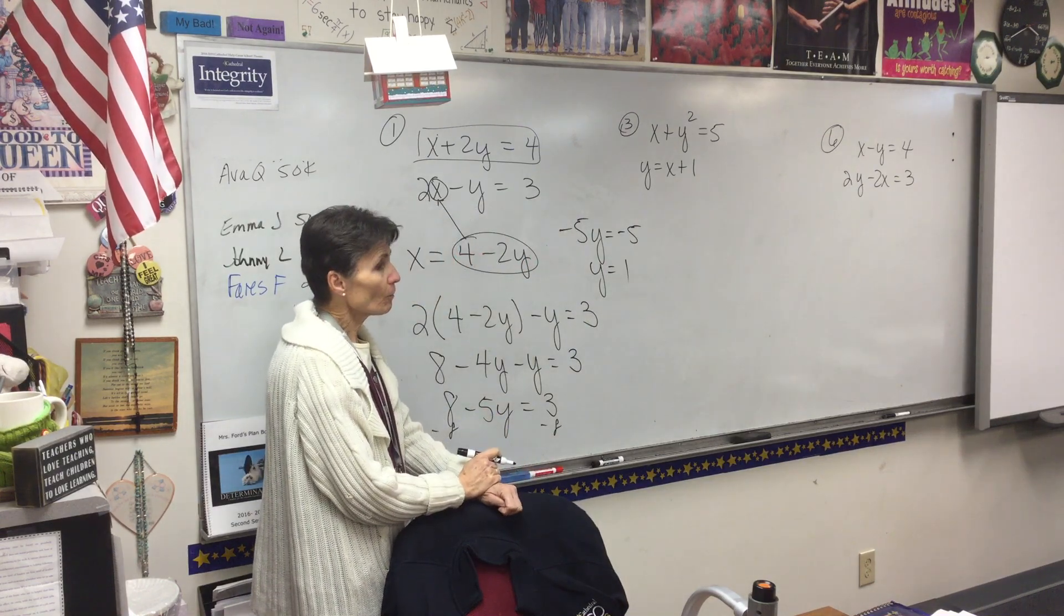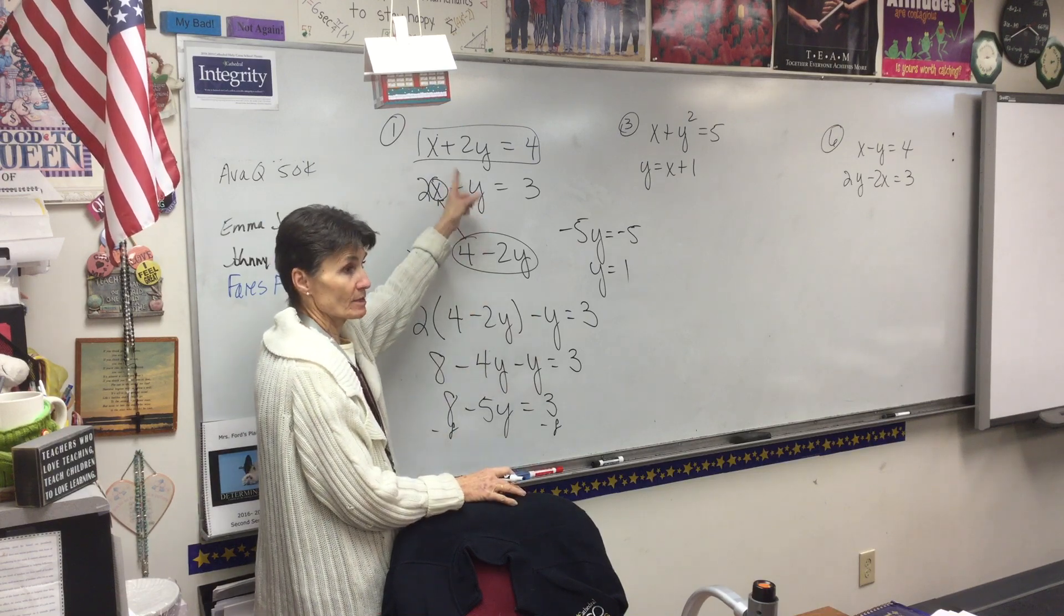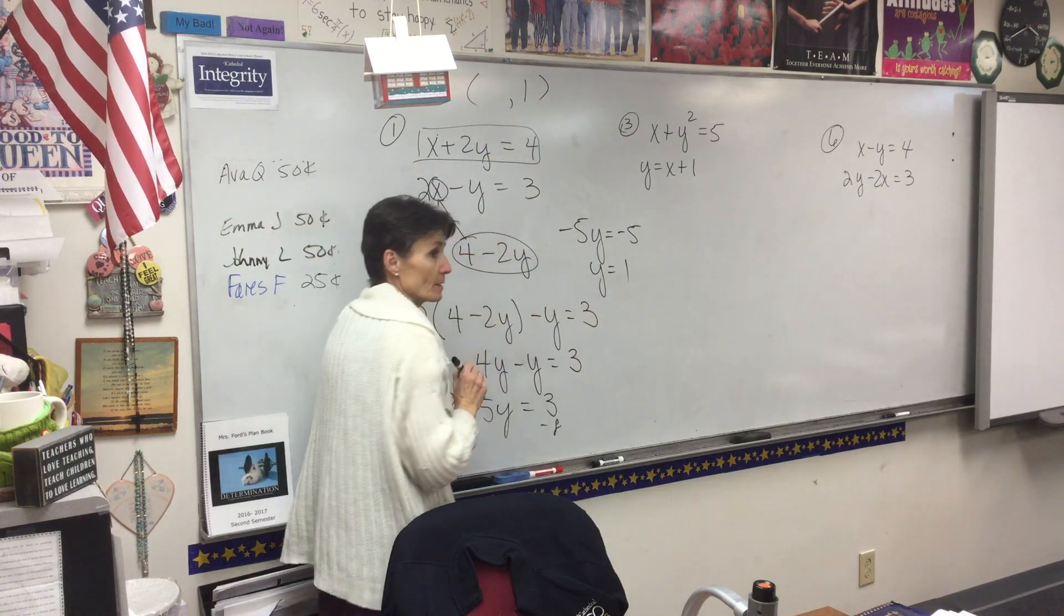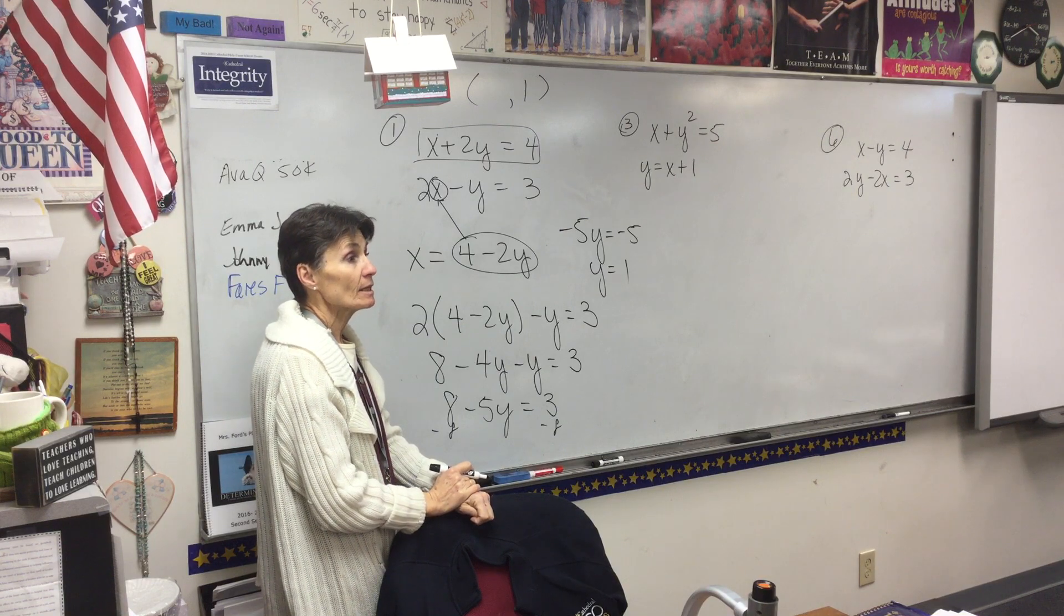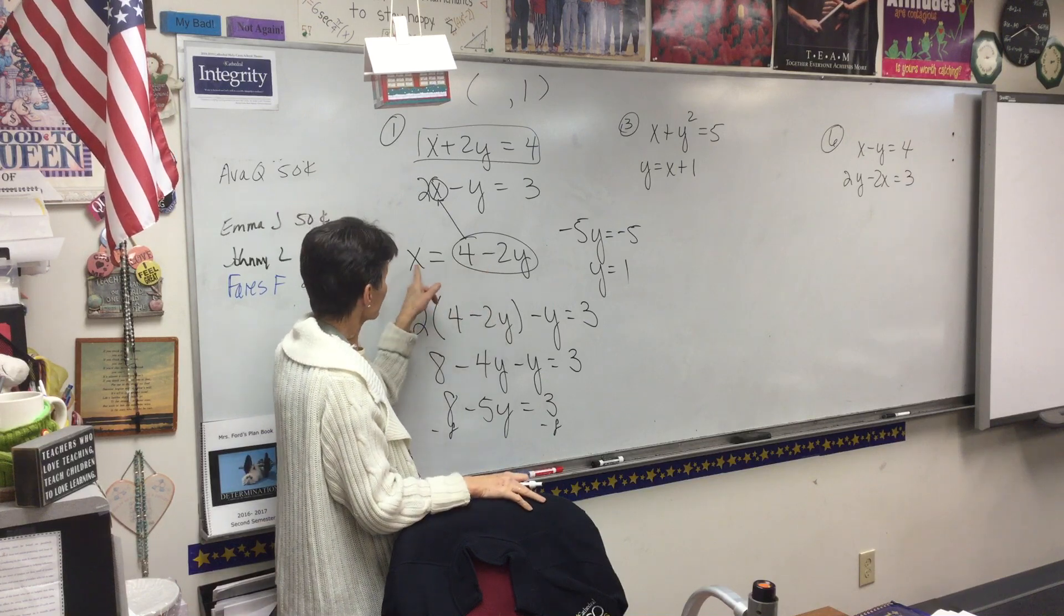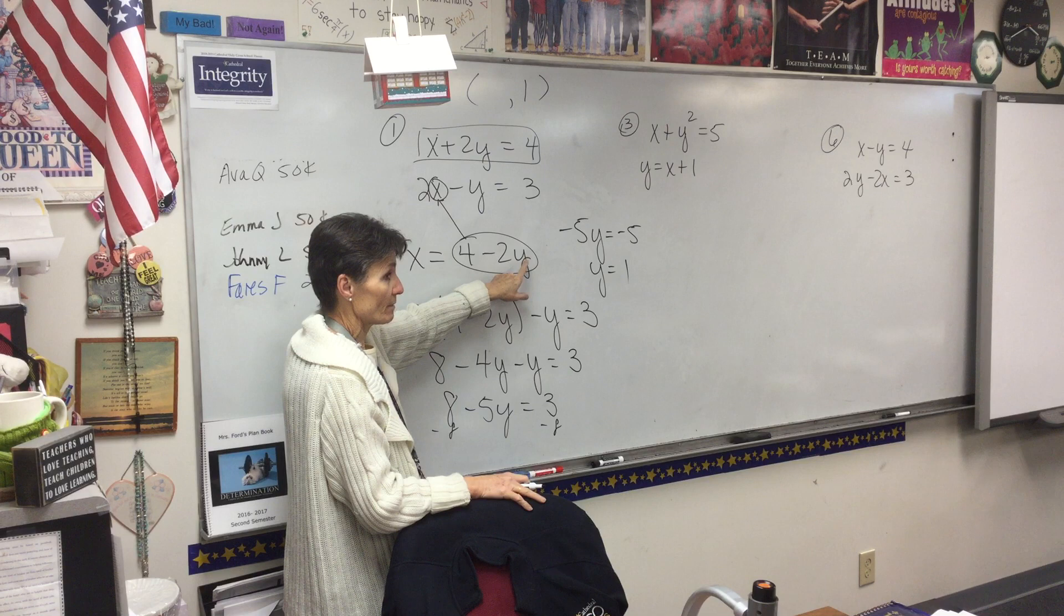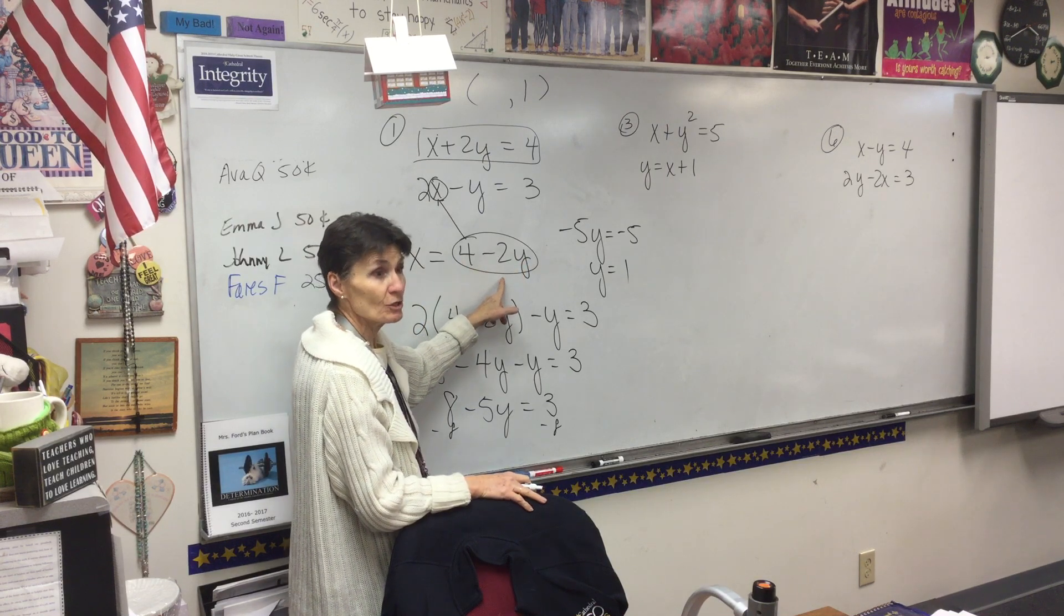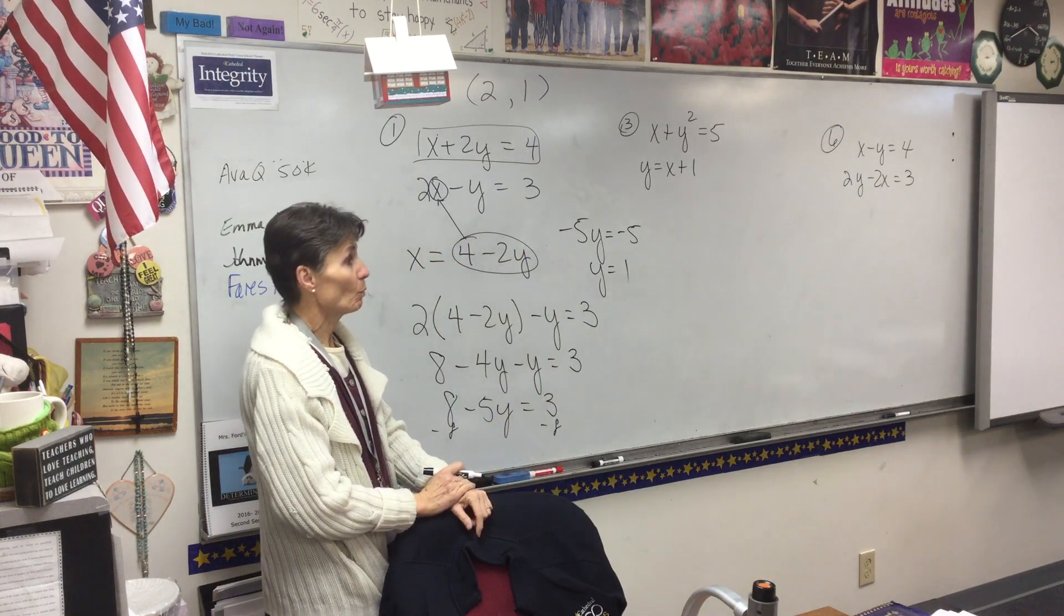But we're not done, are we? Because when we're solving a system, there's two variables there. So we know y is 1. Now we need to figure out what x is, and that's real easy. I like to go back here to my circle right here where it says x equals, and if I know y is 1, if I put 1 in there, what does that say? x equals 4 minus 2, which is 2.